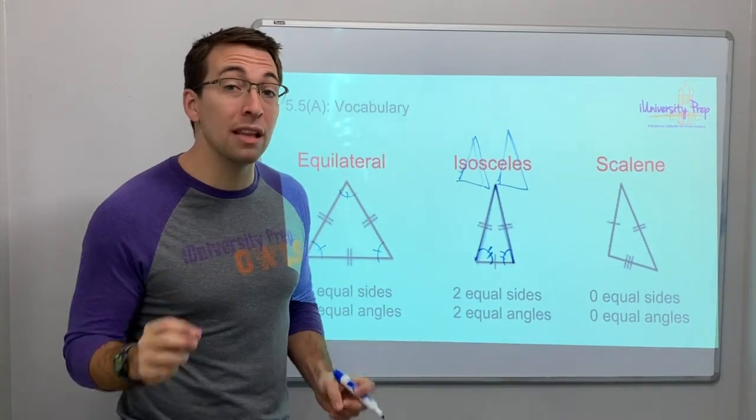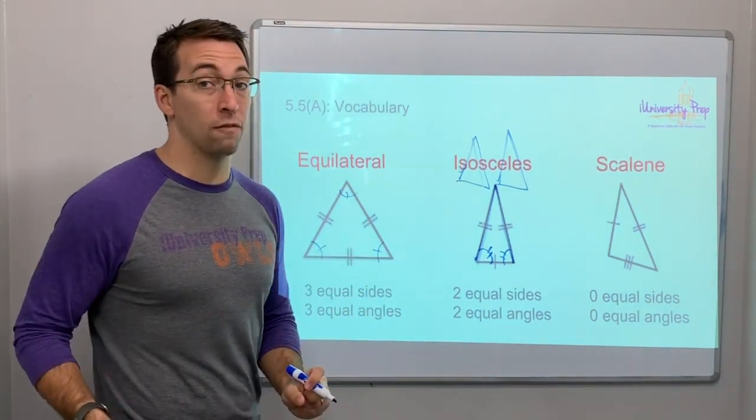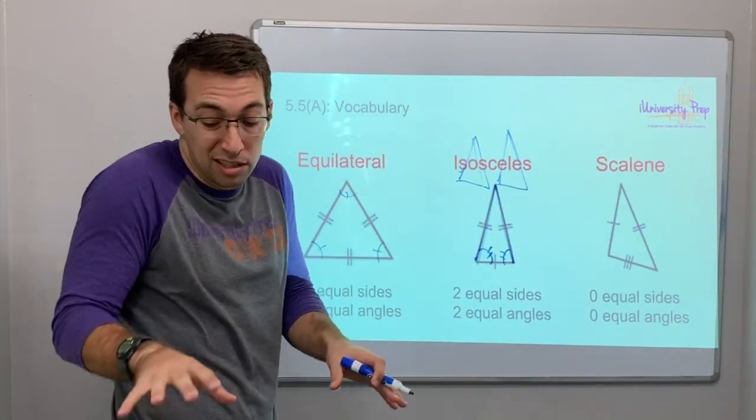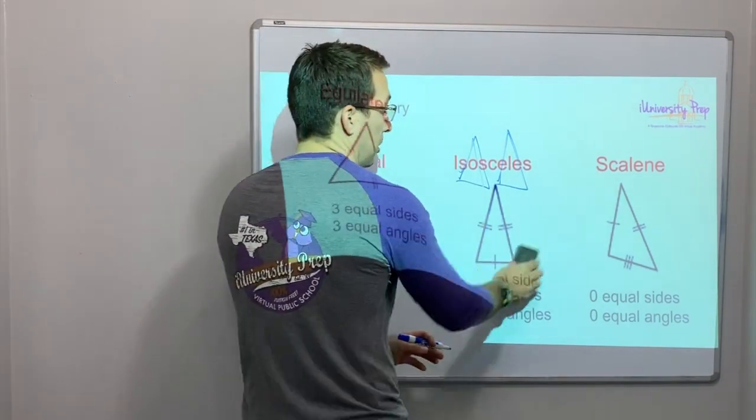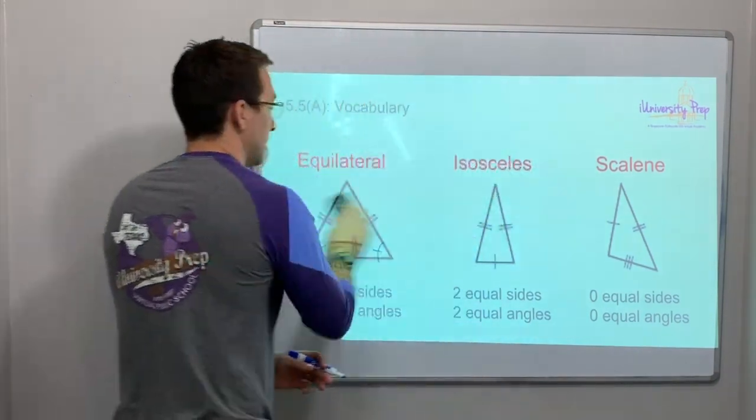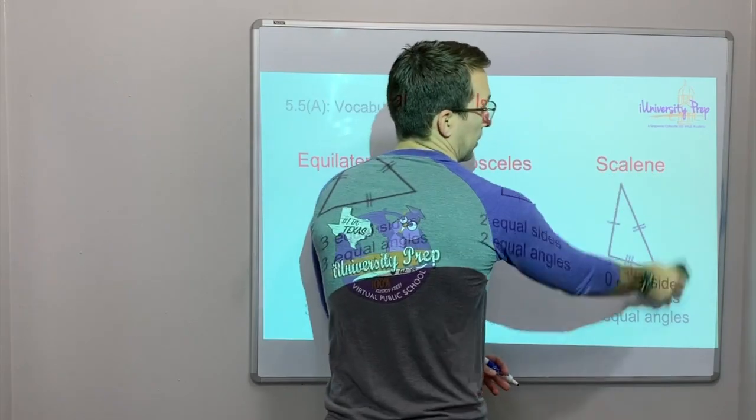Scalene - every line is different, every length is different, and every angle is different. The scalene is the crazy triangle, it's the funky one. You don't ever know what's going on with the scalene triangle.